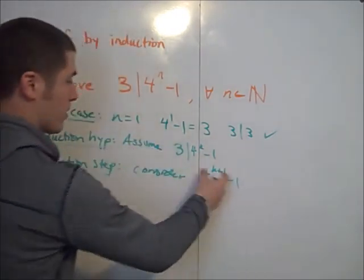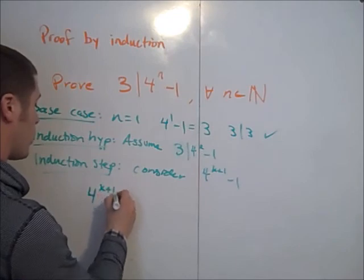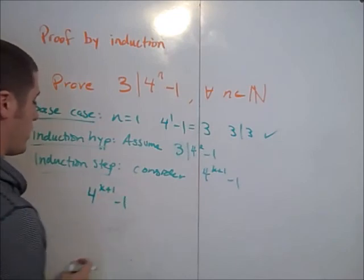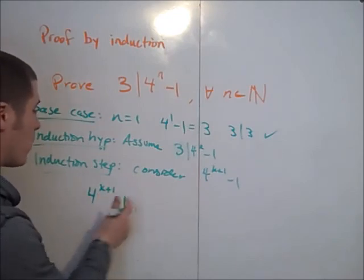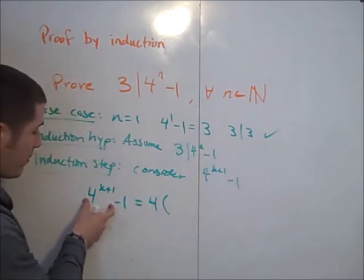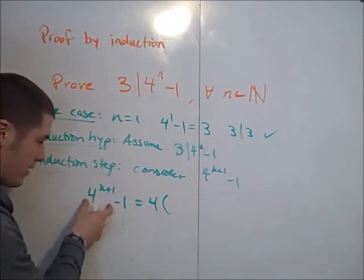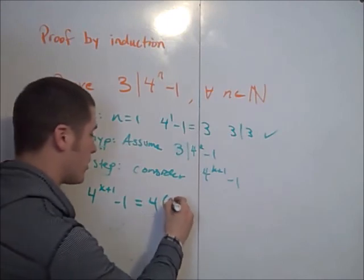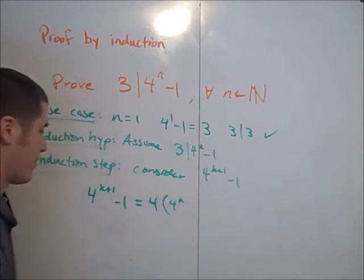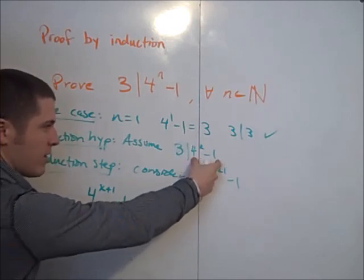We're going to somehow get this to look more like that. So 4 to the k plus 1 minus 1. I'm going to factor out a 4. And when I factor out a 4 from this term, I have 1 less factor of 4 in this exponential. So it should be 4 to the k.